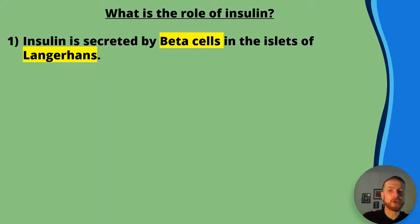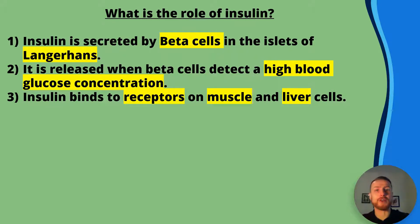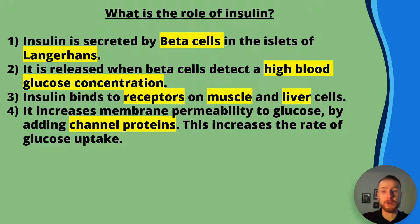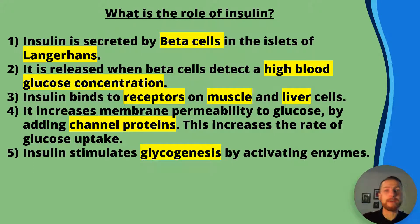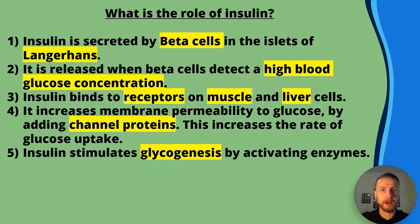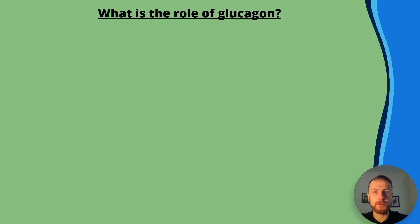What is the role of insulin? Insulin is secreted by the beta cells in the islets of Langerhans and released when beta cells detect a high blood glucose concentration. Insulin binds to receptors on muscles and liver cells and increases membrane permeability to glucose by adding channel proteins, increasing the rate of glucose uptake via facilitated diffusion — because glucose is too large to cross the phospholipid bilayer unaided. Insulin also stimulates glycogenesis by activating enzymes, so glucose taken up from the blood becomes glycogen and more glycogen is stored. Finally, insulin increases the rate of respiration in muscle cells.